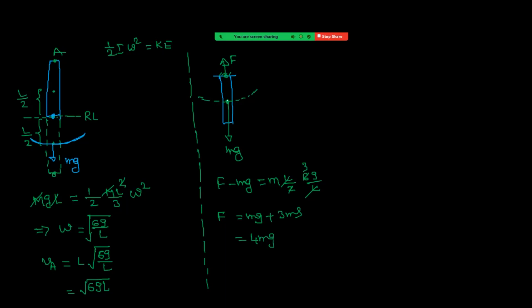At the vertical position, there is no tangential acceleration because Mg produces no torque (it acts along the axis direction), and neither does the hinge reaction. So at this instant the hinge reaction is only along the vertical and equals 4Mg.